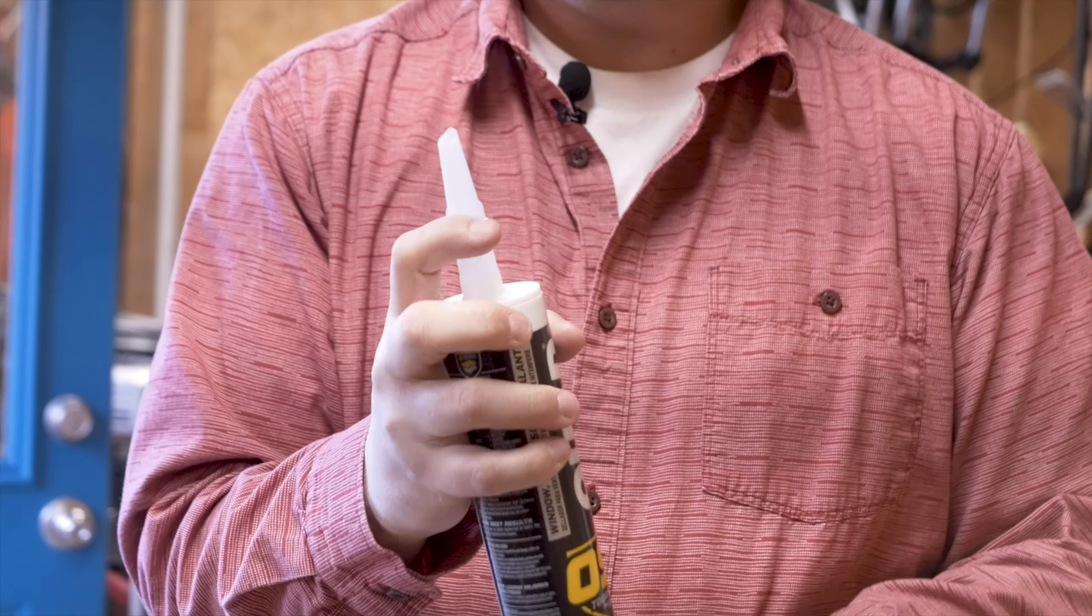Here's another tip with your caulking. You've got a brand new tube, you've just cut the tip off, and you need to puncture that little piece of foil.